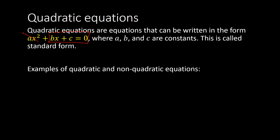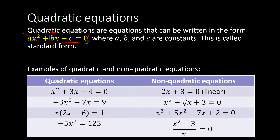Some examples of quadratic and non-quadratic equations are given in this table. With our quadratic equations on the left, you've got an x squared term, an x term, and some constant. Further down, one example has an x squared term and a constant but no x term — that's okay, as long as the x squared term is there. Another one looks like it doesn't have an x squared term, but we just need to expand it out.